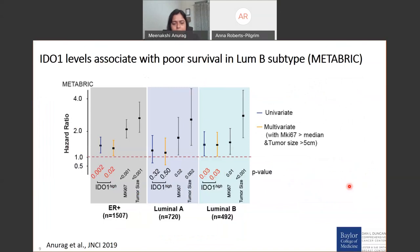We wanted to see if this was not just observed in two datasets. We also checked in Metabrig, where we performed univariate and multivariate tests. In luminal B, IDO1 levels, if high, associate with a higher hazard ratio and are significant in both univariate and multivariate settings — unlike luminal A. This gave us strength to further look into IDO1 levels, what associated pathways exist, and what could be triggering higher IDO1 levels.